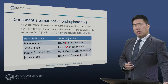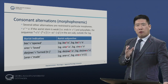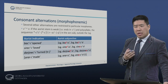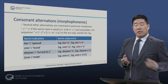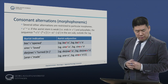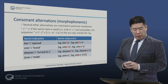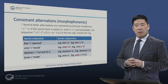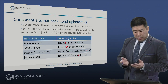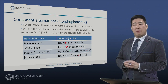Finally, there are a few consonant alternations which are restricted to particular morphemes, and so they are important to keep in mind when studying the morphology of classical Armenian. For example, in the aorist, there is an alternation between ts, aspirated ts, and s. The rule is fairly complex: if the aorist stem is weak, it ends in the sound ts.